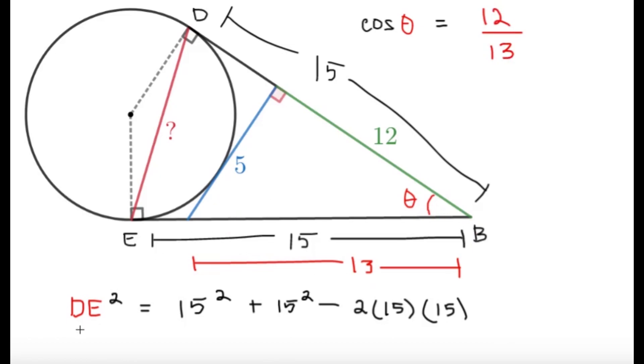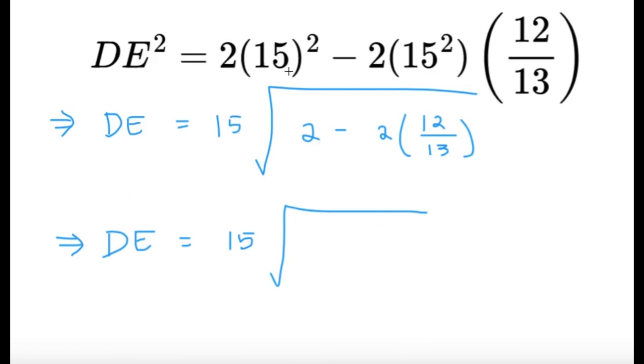So DE squared would be equal to 15 squared plus 15 squared minus 2 times 15 times 15 times cosine theta. Now, we can write DE squared a little bit nicely here. DE squared would be 2 times 15 squared minus 2 times 15 squared times 12 over 13.